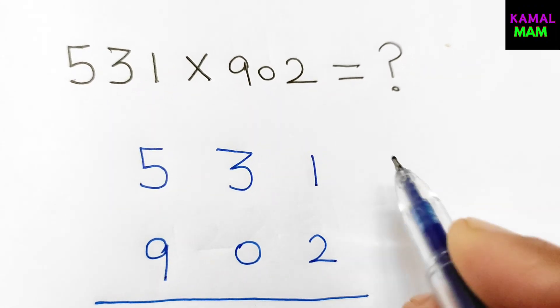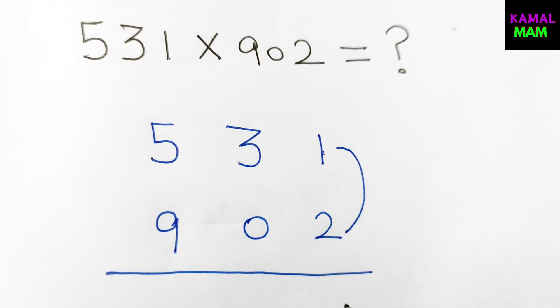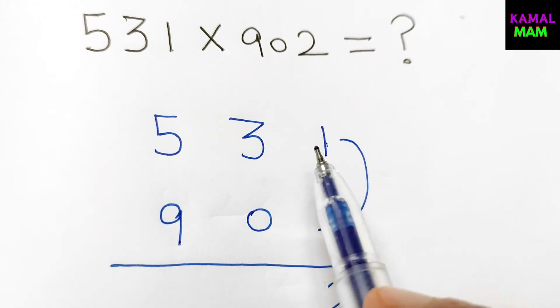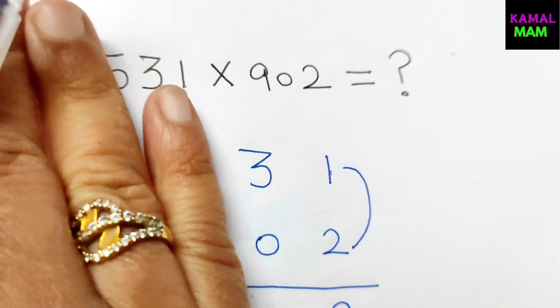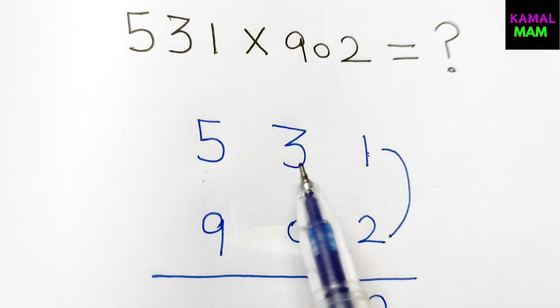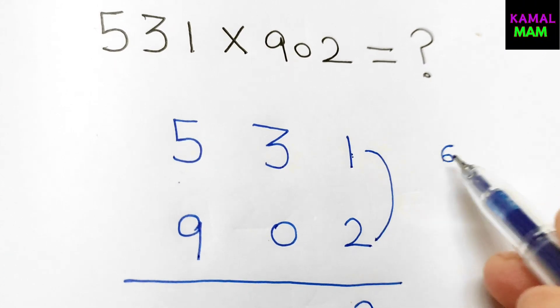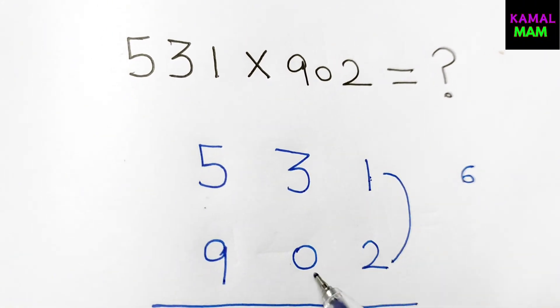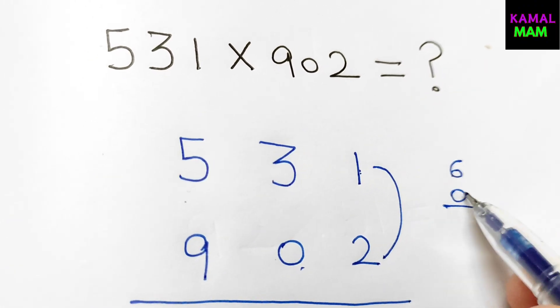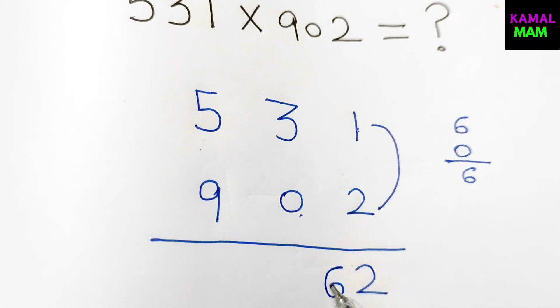First of all, take the last digit and multiply it. 1 into 2, we get 2 here. So we get our last number. Now just forget this number, forget this digit. Cross multiply it: 3 into 2 is 6, then 1 into 0 is 0. Now just add them up, we get 6 plus 0 is 6. So we get our second last digit, 6.